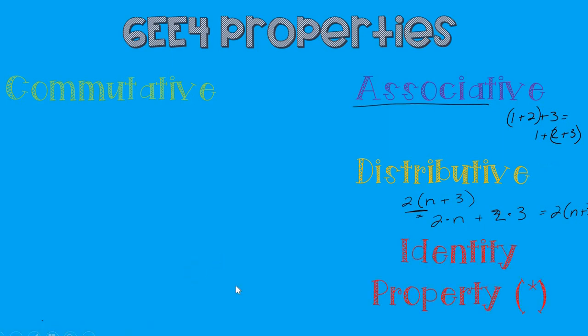Our next property is the identity property of multiplication. So this is a key fact here. When it's multiplication, we know that that identity property, that number, is 1. So any number times 1 is going to stay the same. It's going to keep its identity.